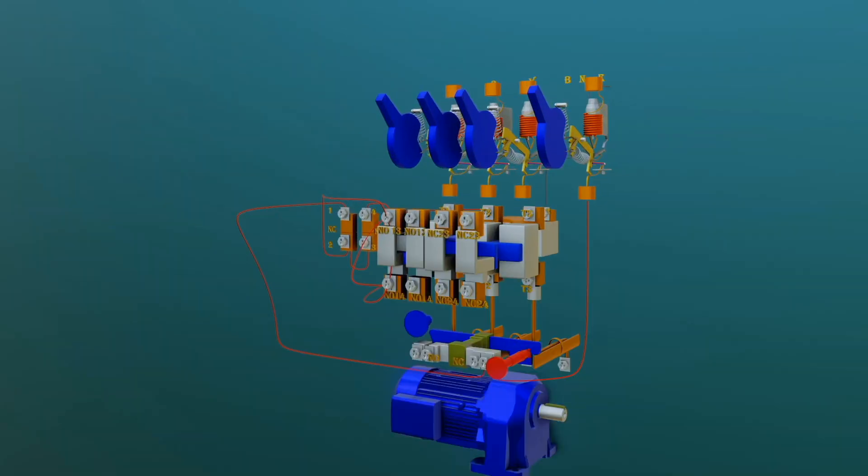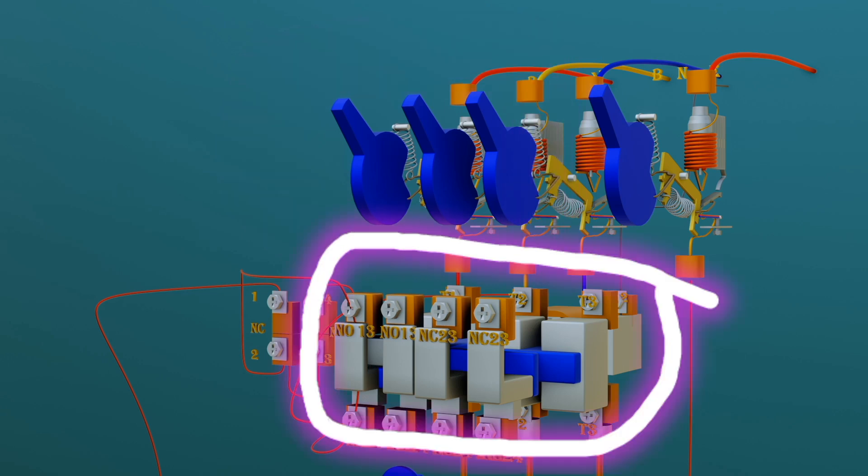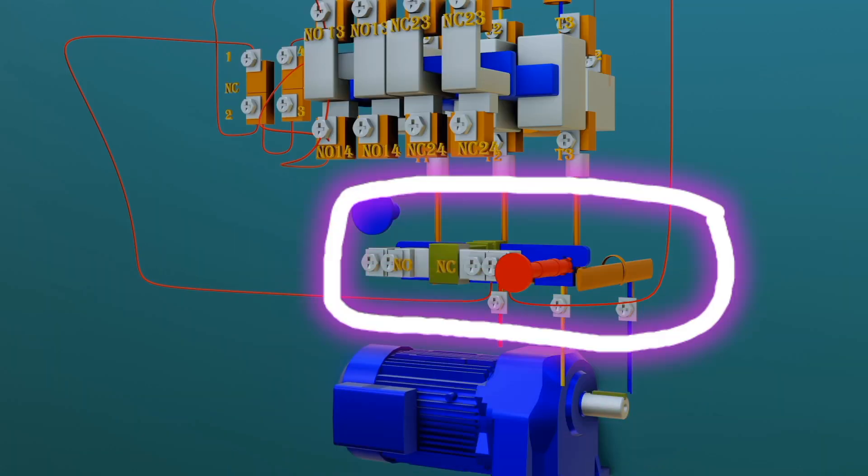For power circuit DOL, we can see all the three phases are connected in their corresponding phases in three-phase circuit breaker, three-phase contactor, and also three-phase overload relay.